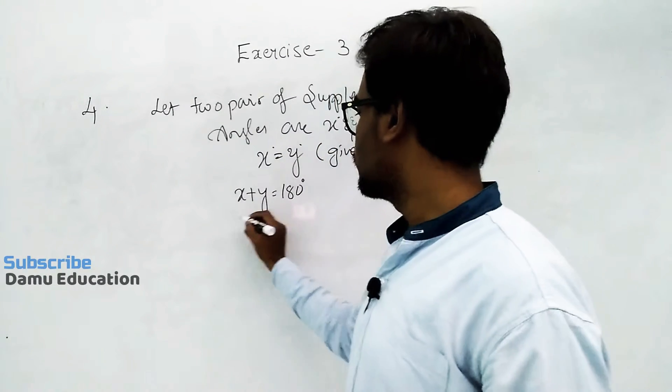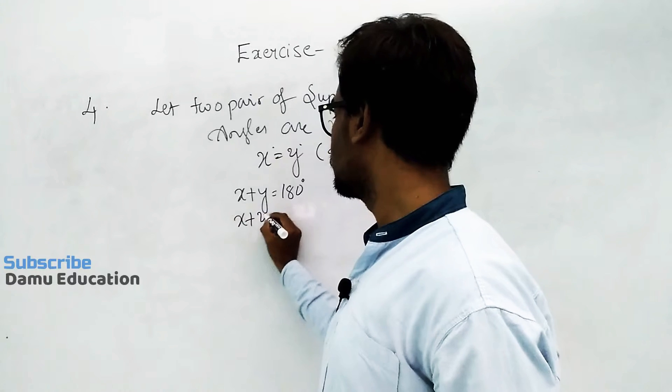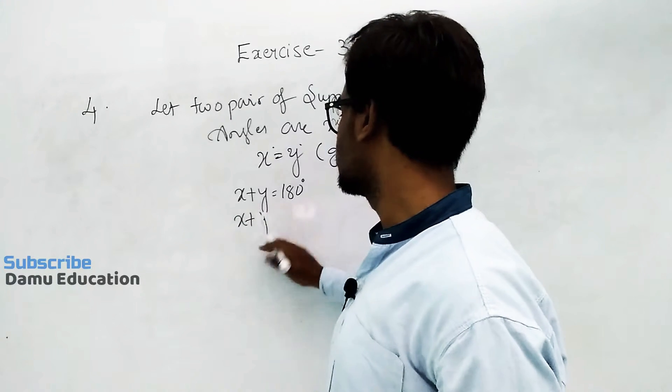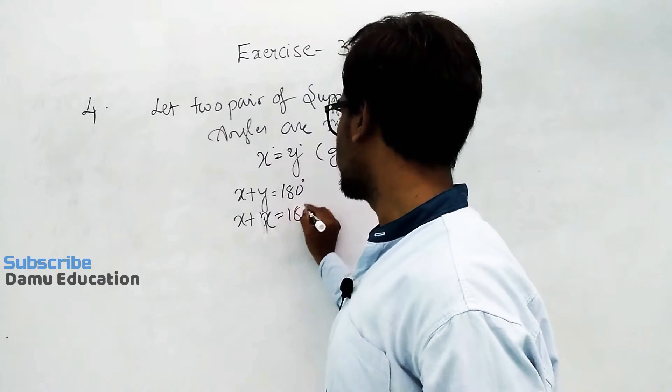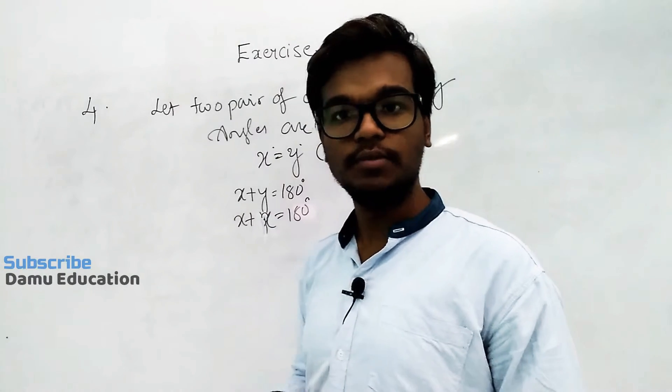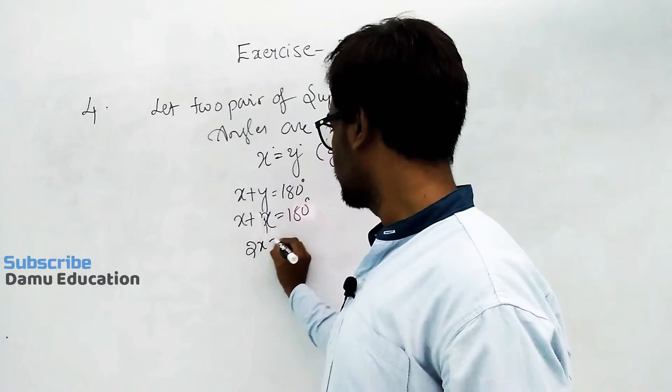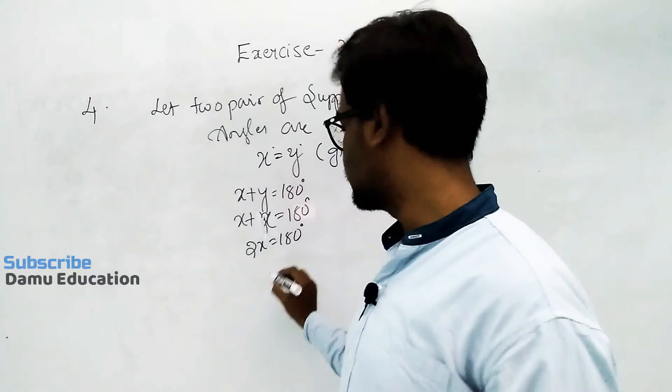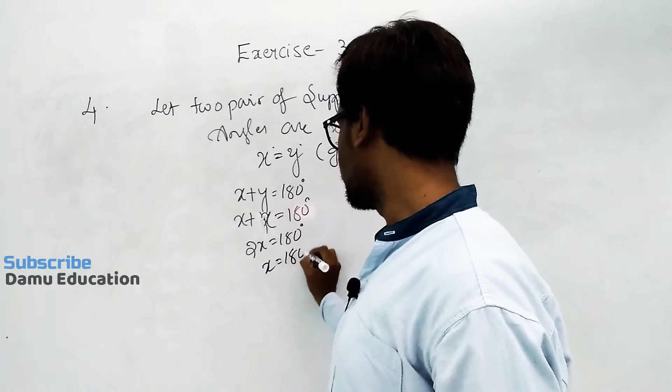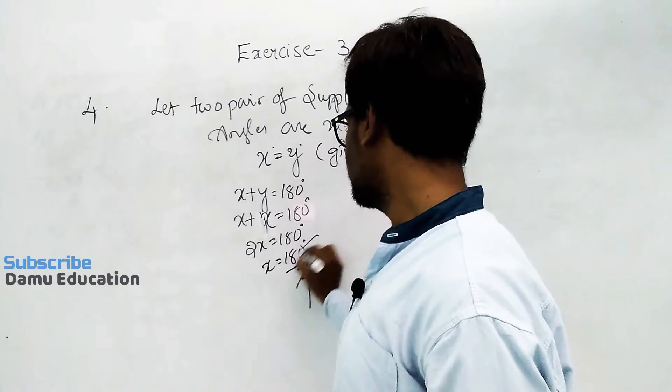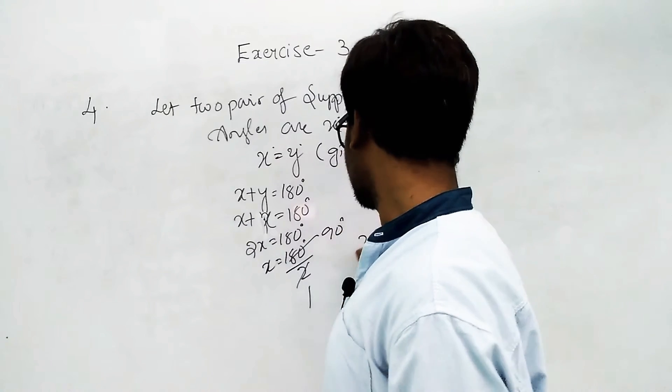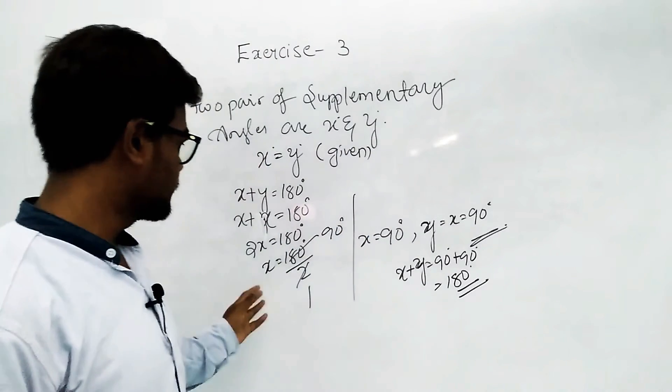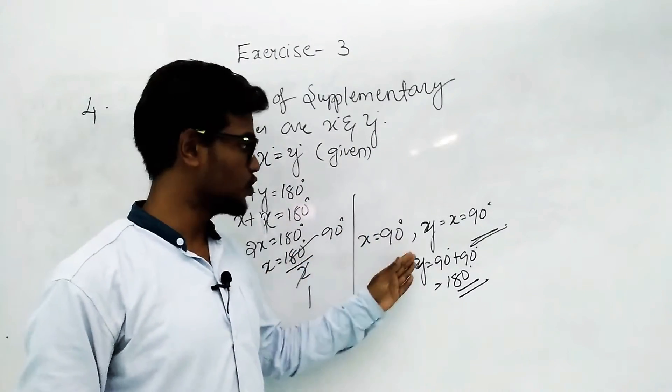So substitute x: x plus x equals 180 degrees. x plus x will become 2x, that equals 180 degrees. Then x equals 180 degrees divided by 2, which is 90. So x equals 90 degrees.